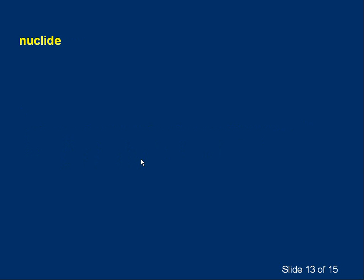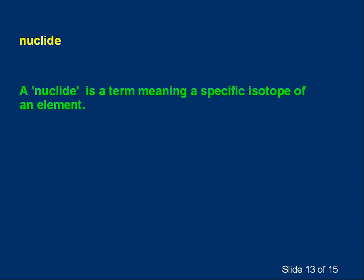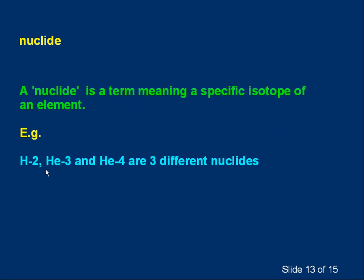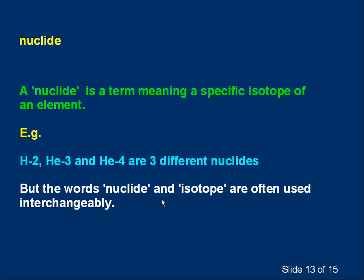The term nuclide is something you may come across. A nuclide simply means a specific isotope of an element — a particular isotope. For example, hydrogen-2 is a nuclide, helium-3 is a nuclide, helium-4 is a nuclide. You'll find the words nuclide and isotope are often used interchangeably, but you typically use isotope when referring to different versions of the same element, and nuclide when talking about one specific item or different elements.